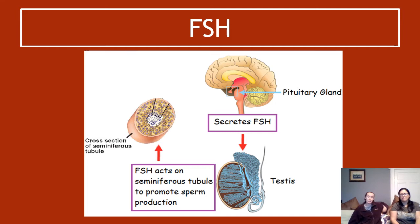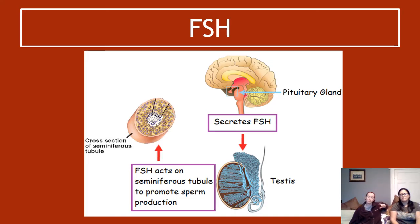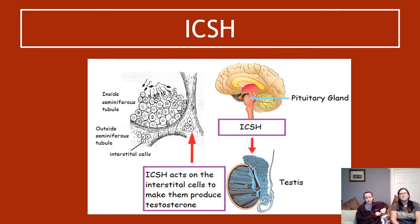FSH is produced in the pituitary gland, which then secretes it to the testes. Hormones are often made in one place and act in another, so FSH is made in the pituitary but acts in the testes. Specifically, FSH acts on the seminiferous tubules to promote sperm production. That's all you need to know about FSH.